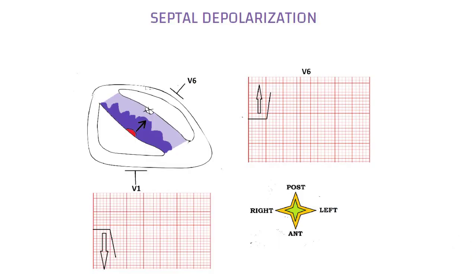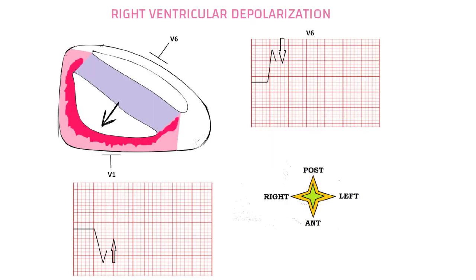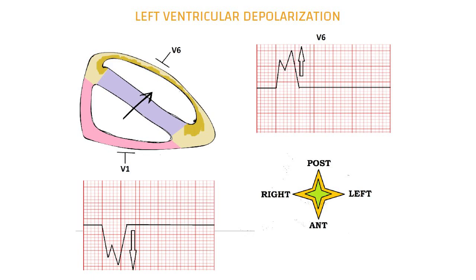In left bundle branch block, the wave of septal depolarization starts from the right bundle branch, such that the wave spreads towards V6 and away from V1, leading to a positive deflection in V6 and negative deflection in V1. This is followed by depolarization of the right ventricle towards V1 and away from V6, causing a positive deflection in V1 and negative deflection in V6. Then the left ventricle depolarizes, with the wave moving towards V6 and away from V1, leading to a positive deflection in V6 and negative deflection in V1.